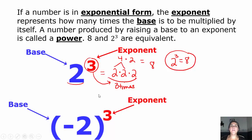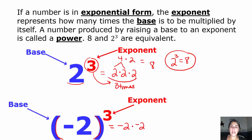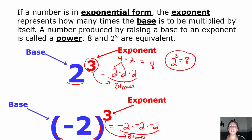Sometimes the base will be negative. Anytime the base is negative, they'll always put that base within parentheses. A base of negative 2 to the third power means to just take negative 2 and multiply it by itself 3 times. Our exponent is 3, so we're going to multiply negative 2 by itself 3 times.